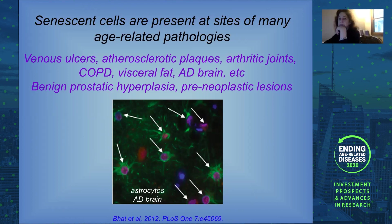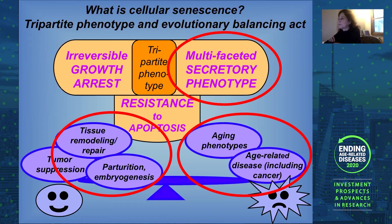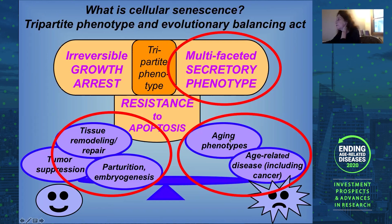I'd like to show you data from several labs, including ours, focusing primarily on this multifaceted secretory phenotype, which is what most of us are focused on because it is so complex and because it lends itself to interventions — which is of course the big goal that most of us aim for when we study aging. The secretory phenotype is important for tissue remodeling and repair, for the role of senescent cells during embryogenesis, but we also believe it is a major driver of those phenotypes and pathologies that we associate with aging.